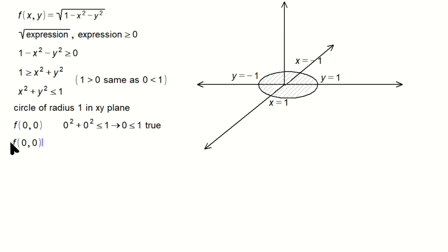So f of 0, 0 equals, and then you do 1 minus 0 squared, minus 0 squared, but that's just the root of 1, which is 1. But that's just the value of z, in other words. So we have a point here that corresponds to on a graph. The point is 0, 0 for x and y, and z has the value 1 here.